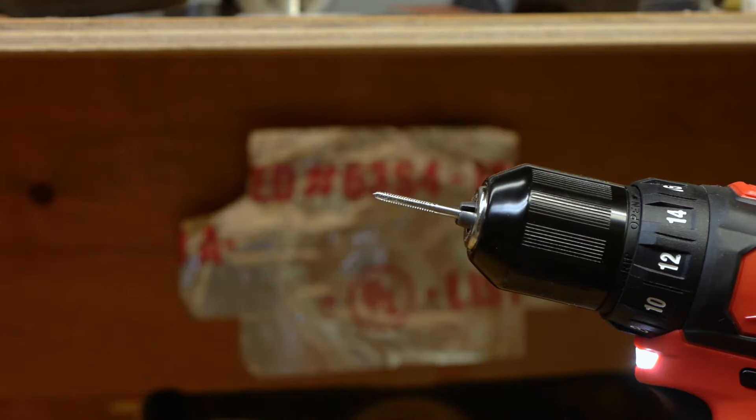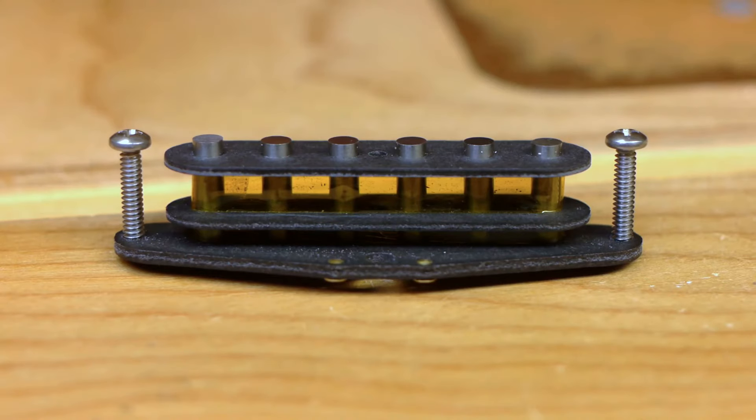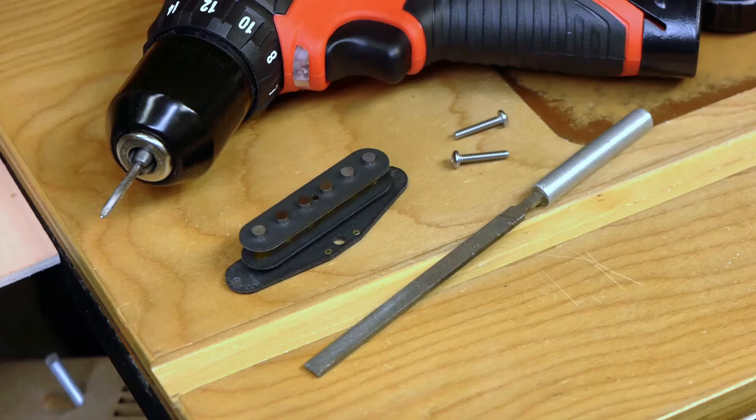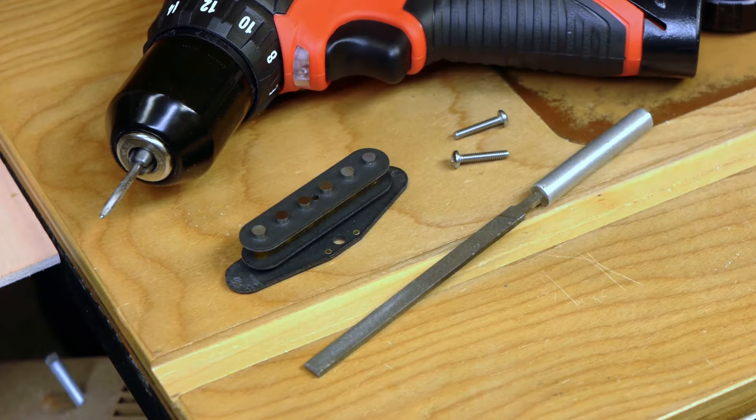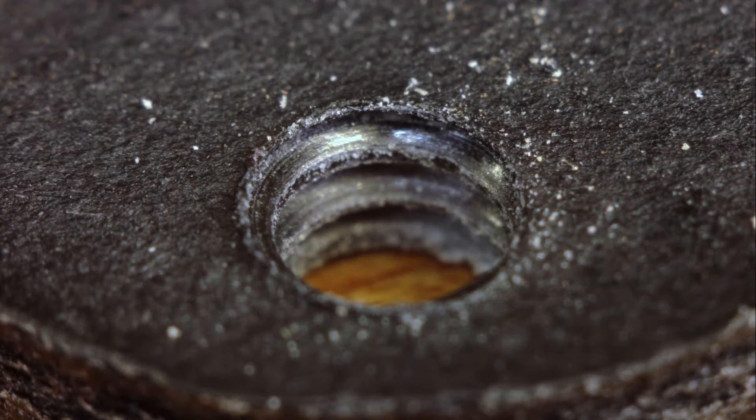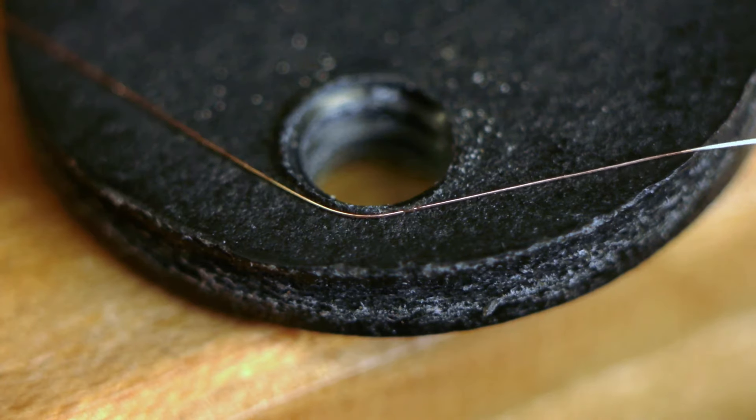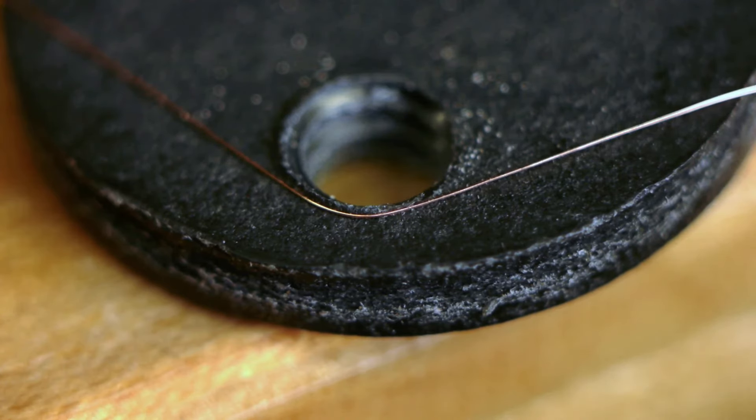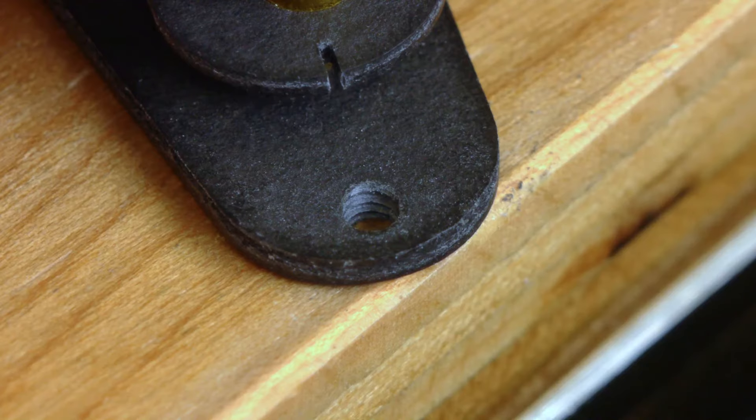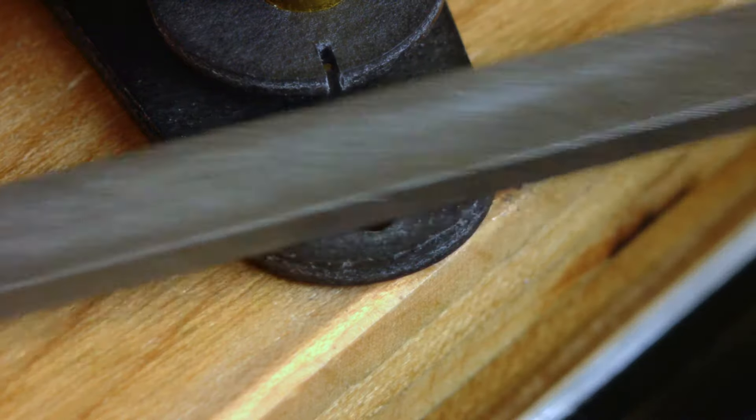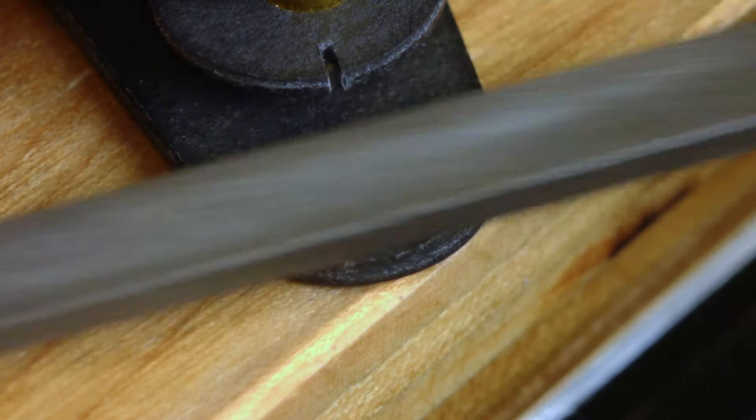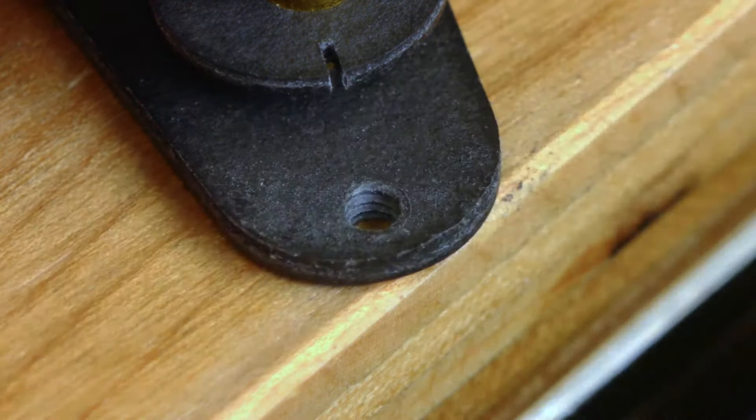Once both sides are completed, the screws will thread in easily ensuring a smooth and frustration-free installation. However, there's one more step before moving forward. Using a file to smooth over the flatwork again. The flatwork can flare out when tapping the screw holes and the magnet wire can and will snag on those flares. File over both screw holes and make sure those flares are thoroughly eliminated and the flatwork completely smooth.